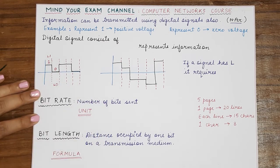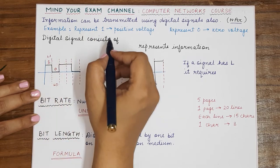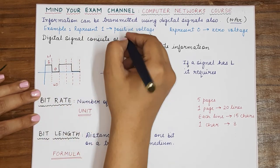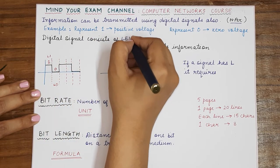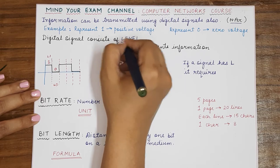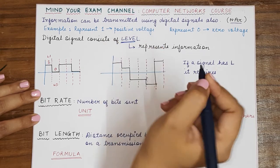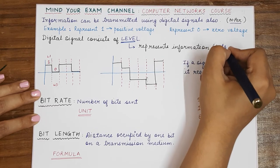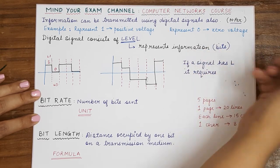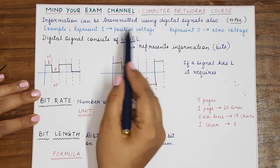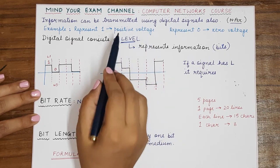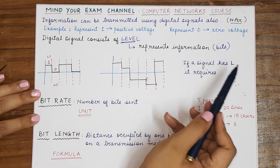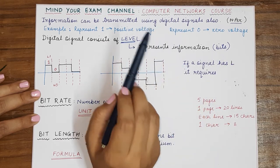So digital signals can be represented or they consist of levels and each level represents some form of information and this information is generally in the form of bits. Now how many levels are present determines how many bits will be representing each level.